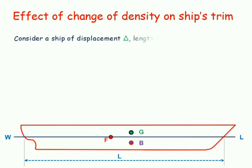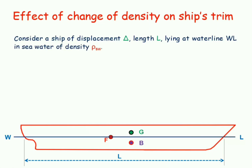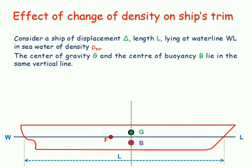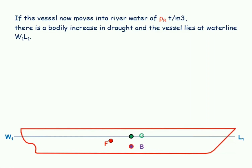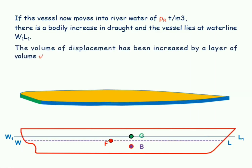Let's consider a ship of displacement delta, having length L, lying at waterline WL, in seawater of density Rho SW. The center of gravity and center of buoyancy are in the same vertical line, and hence the ship is in equilibrium. If the ship now moves into river water of density Rho R tonnes per metre cube, there occurs a bodily increase in the draft, and the vessel will start floating on waterline W1L1. There has occurred an increase in the volume of displacement by an added layer of volume, let's call it v.